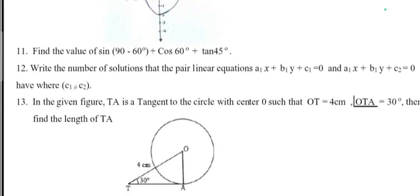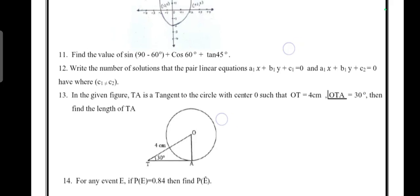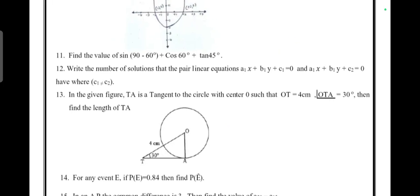Write the number of solutions that the pair of linear equations a₁x + b₁y + c₁ = 0 and a₂x + b₂y + c₂ = 0 have, where c₁ ≠ c₂.